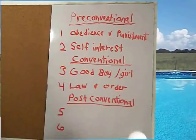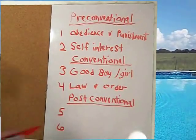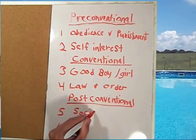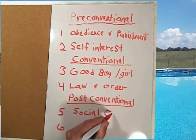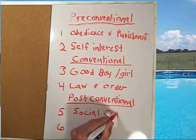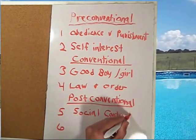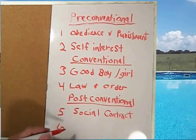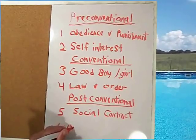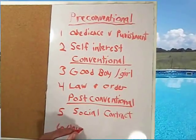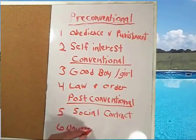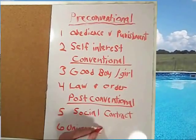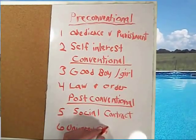Stage five is the social contract orientation — morals are determined by socially agreed upon standards. And the final stage, stage six, is the universal ethical principles orientation. There are universal principles of human dignity and social justice that individuals should uphold, no matter what the law or other people say.